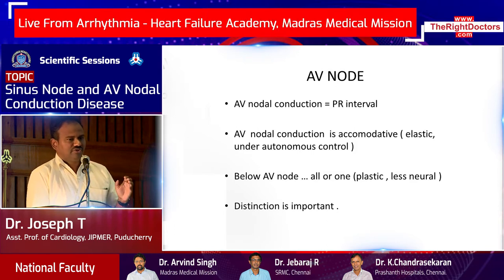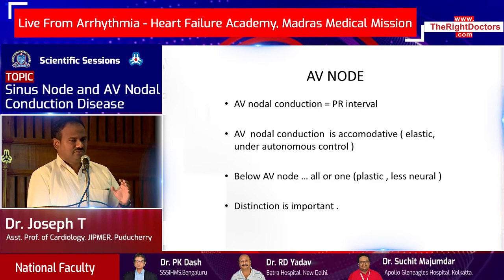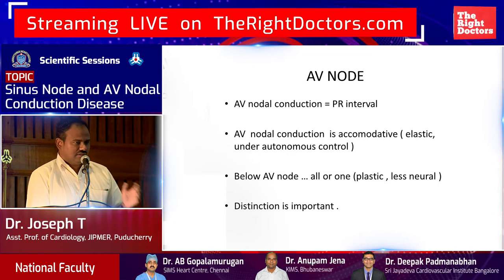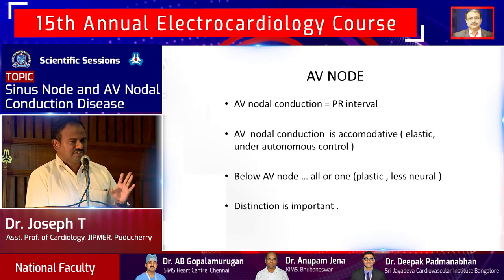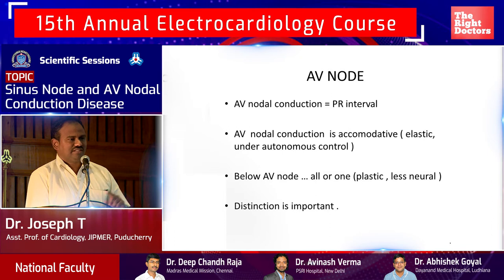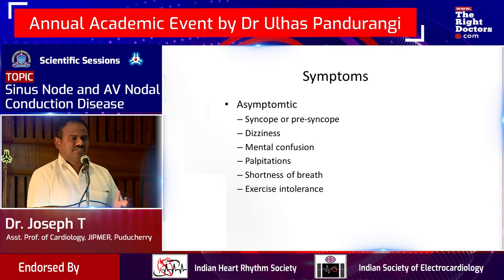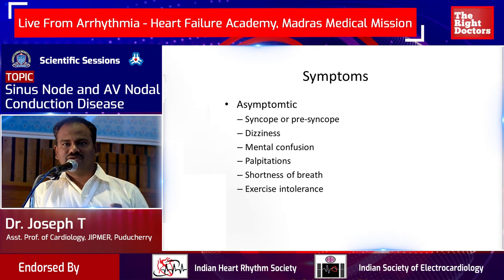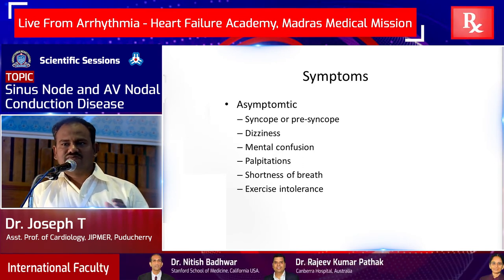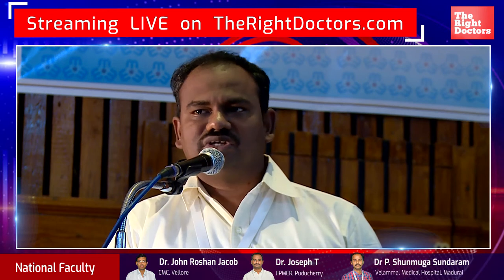If it is a nodal block, you are going to get a stable junctional rhythm — a narrow, stable rhythm. If it is an infranodal block, it is going to be a wide QRS rhythm and may not be stable. If it is an infranodal block, treat the patient and then evaluate the etiology. If it is a nodal block, evaluate the etiology first — you need not hurriedly go and treat. Most patients are asymptomatic if they maintain a good escape rate and cardiac output, but some can present with syncope, presyncope, dizziness, mental confusion, palpitation, shortness of breath, or exercise intolerance.